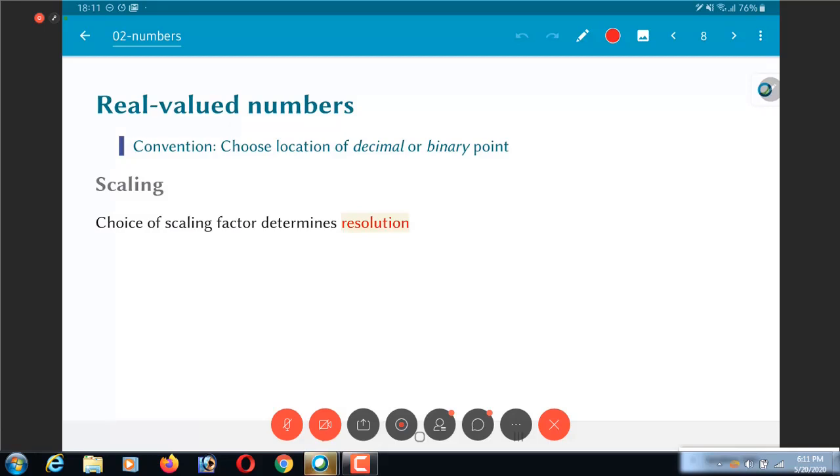We essentially say that I am going to scale the number by a certain value. So in decimal, for example, I could say that if I had 5 digits, the smallest increment that I can have is 1. That would correspond to a change in the LSB.